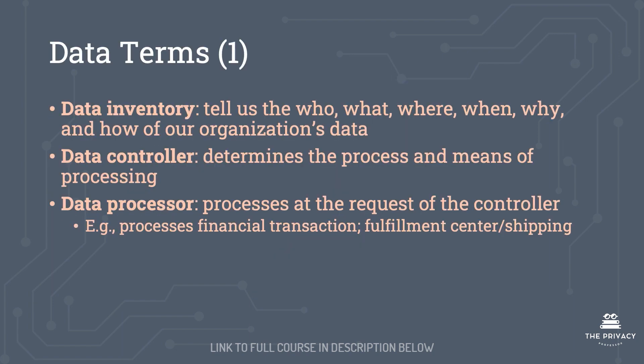There are a few terms we need to understand for the CIPP US, including data inventory, data controller, and data processor. A data inventory tells us the who, what, where, when, why, and how of our organization's data. A data controller is an individual or organization that determines the process and means of processing. A data processor is someone who processes data at the request of the controller — for example, to process a financial transaction or fulfill an order at a fulfillment center or shipping.